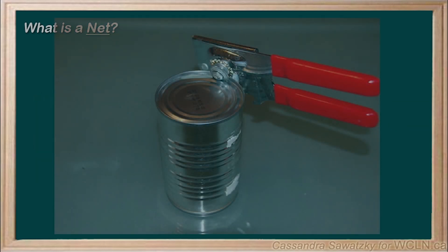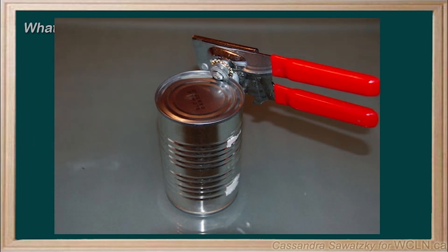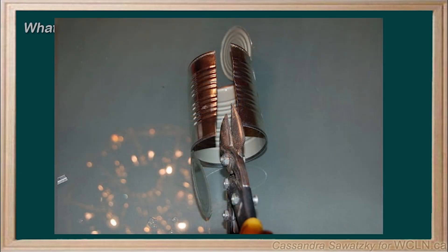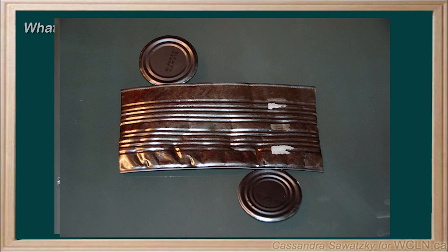In the same way, if you took a can, another three-dimensional object, and cut the top and bottom off, and cut down the side, you'd have a flat, or two-dimensional, net. The resulting flattened can would be the net.